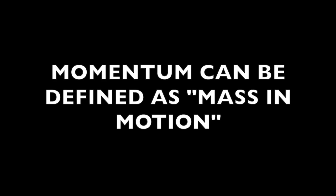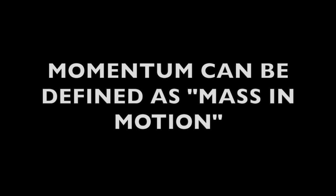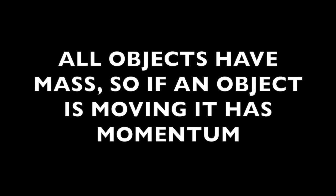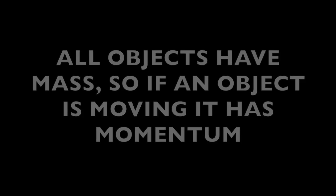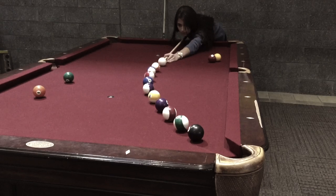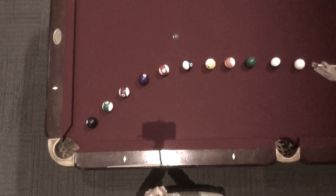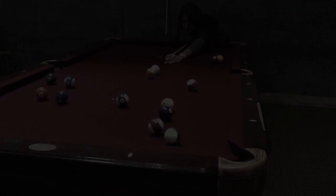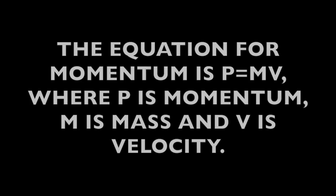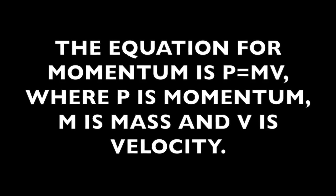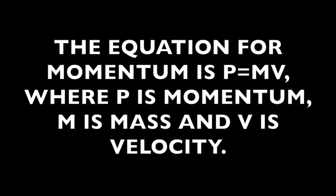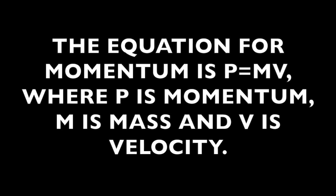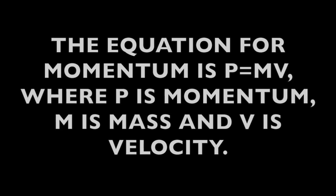Momentum can be defined as mass and motion. All objects have mass, so if an object is moving, it has momentum. In every collision, momentum is conserved. The equation for momentum is p equals mv, where p is momentum, m is mass, and v is velocity.